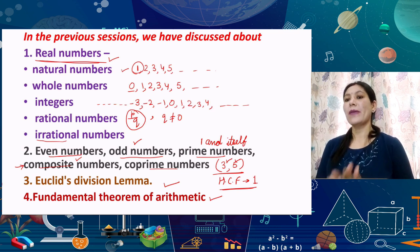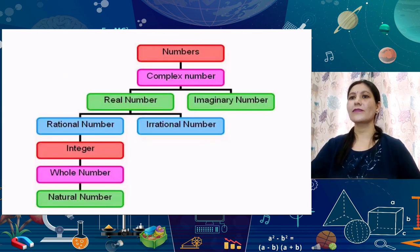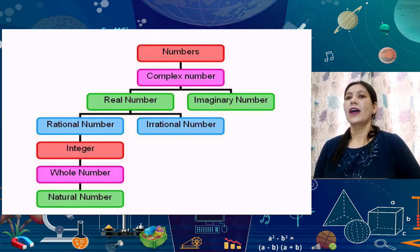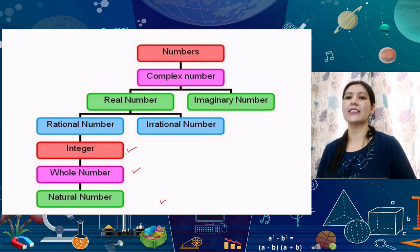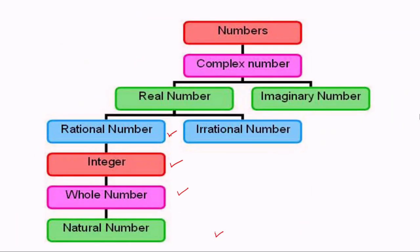Today we will discuss many questions based on Euclid's division lemma, then proceed to today's topic. A chart has been prepared showing natural numbers, then whole numbers — all natural numbers come under the set of whole numbers, all whole numbers under integers, all integers under rational numbers, and the combination of rational and irrational numbers forms real numbers. In class 11, if we add imaginary numbers, the combination of real and imaginary numbers forms complex numbers — this is all known as number theory.